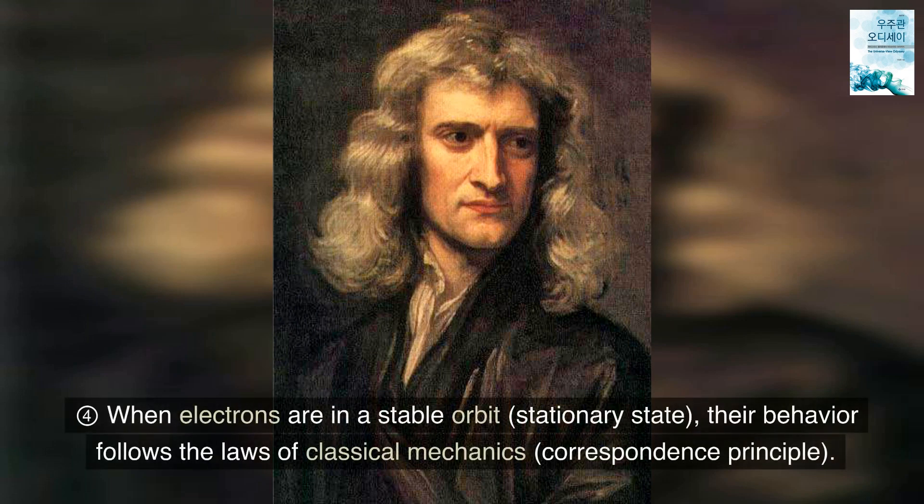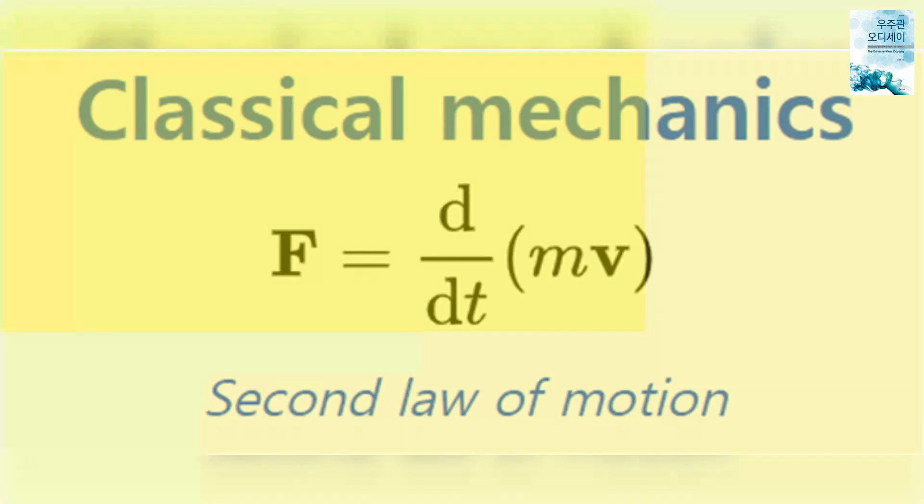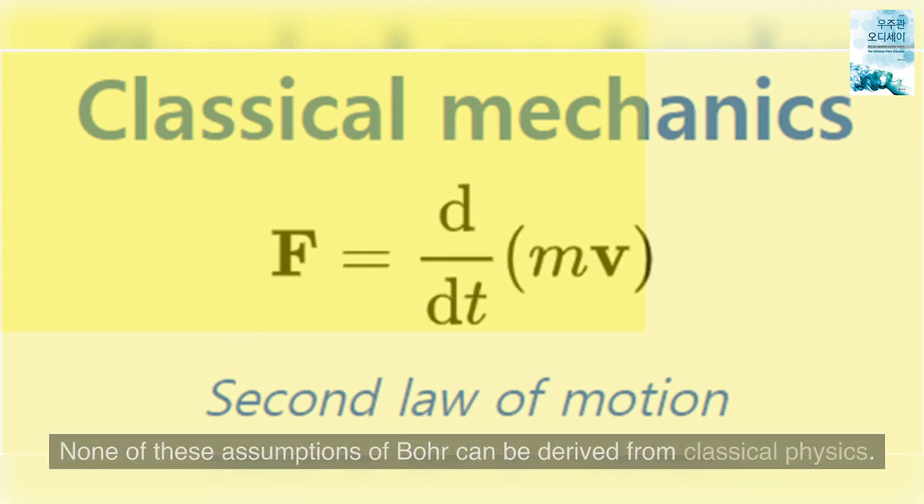Four: When electrons are in a stable orbit, stationary state, their behavior follows the laws of classical mechanics, correspondence principle.